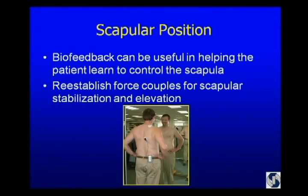We use quite a bit of feedback — double mirrors in therapy, so there's a mirror in front and a mirror behind. We'll inhibit the muscle that needs to be inhibited; frequently with a hyperactive upper trapezius, we'll inhibit the upper trap, then use it to identify the function of the lower trap. This helps the patient identify the force couples for scapula stabilization and get the arm overhead with less impingement.